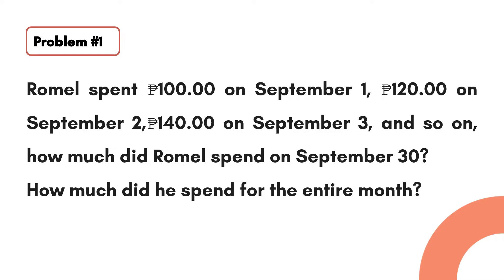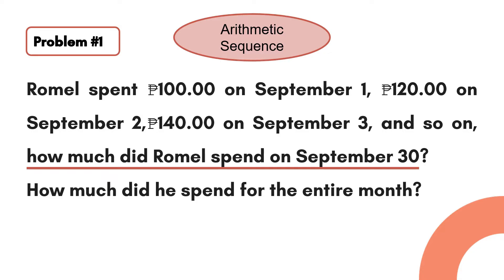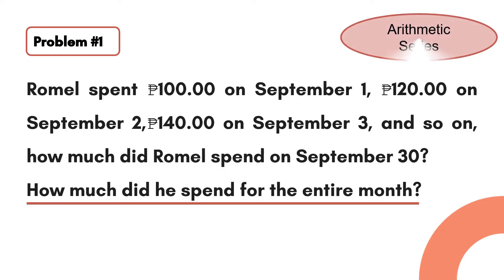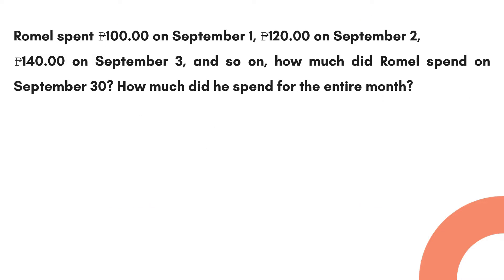In this problem we will compute for the amount spent on September 30. To answer this question we will use the arithmetic sequence formula. We are also going to compute for Rumel's total expenses for the entire month, and to solve this we are going to use the arithmetic series formula.